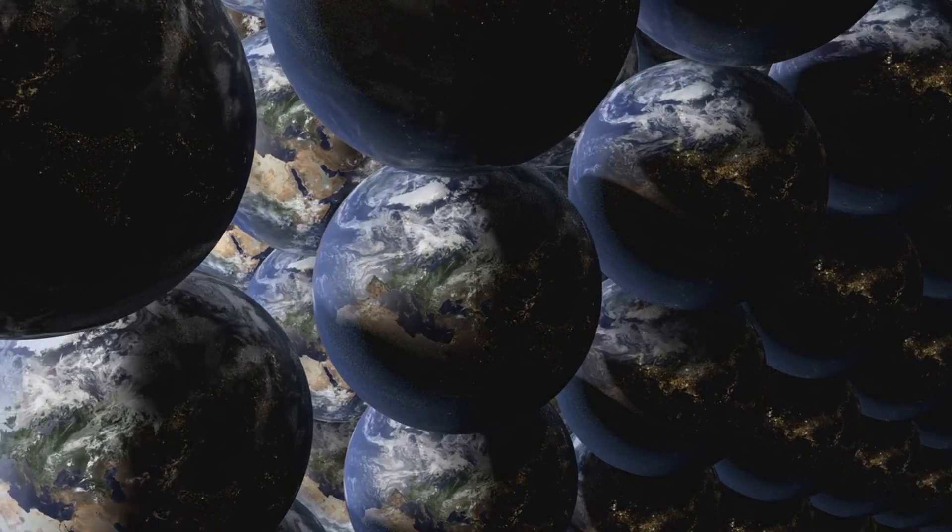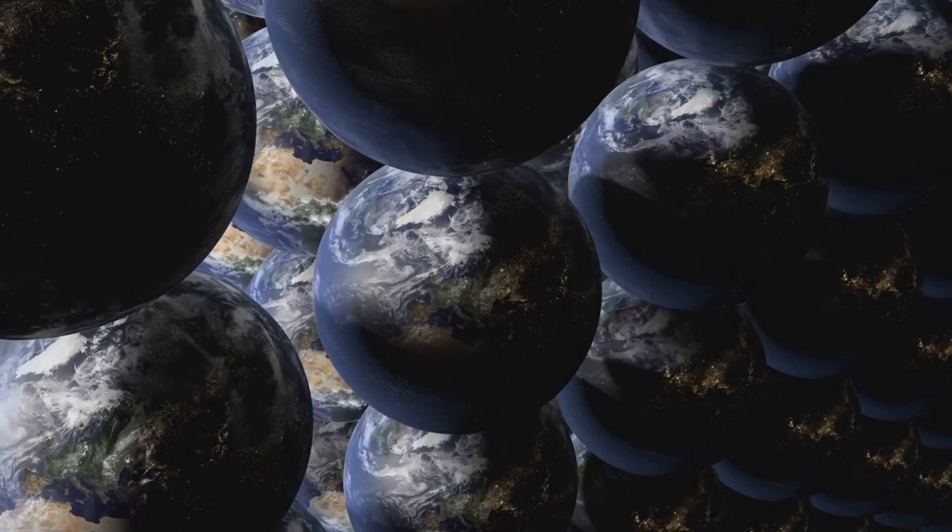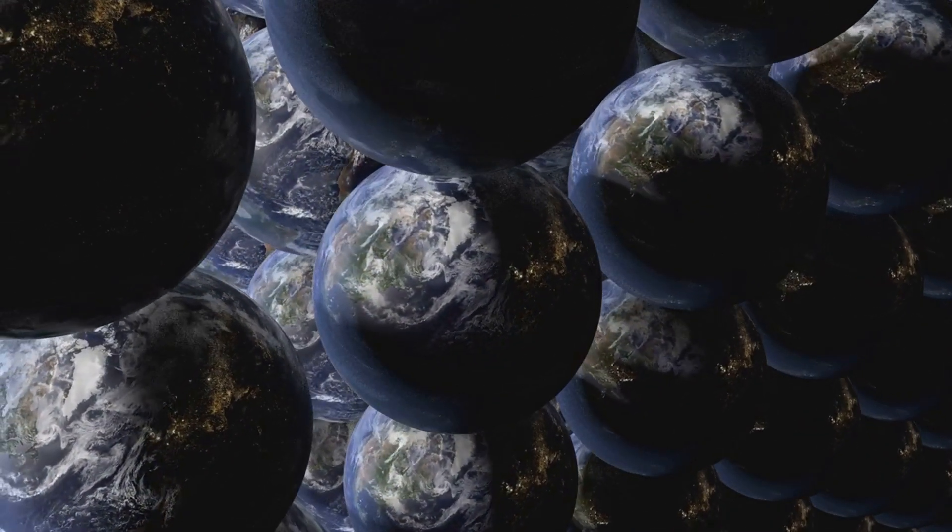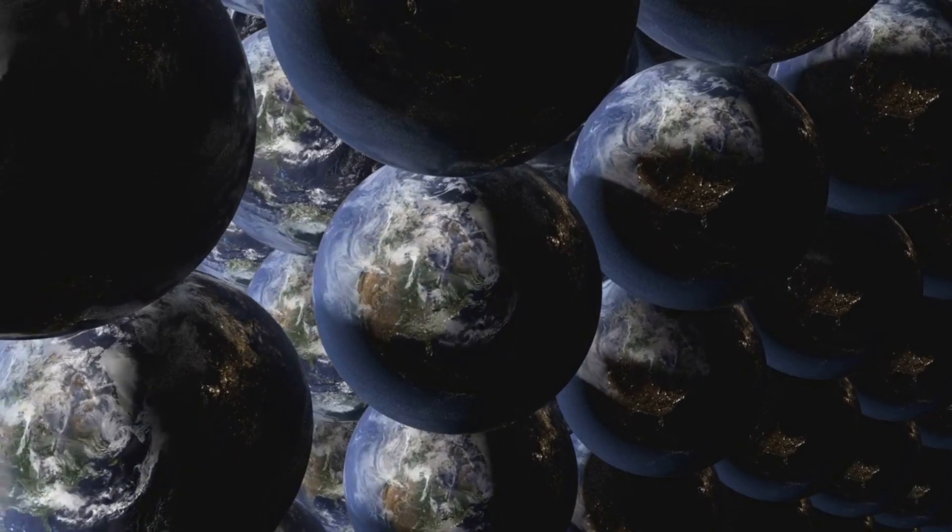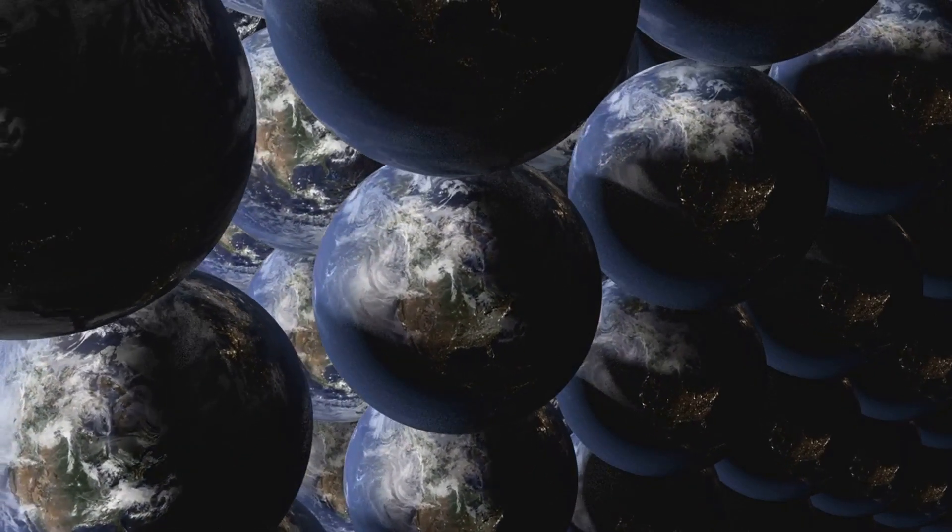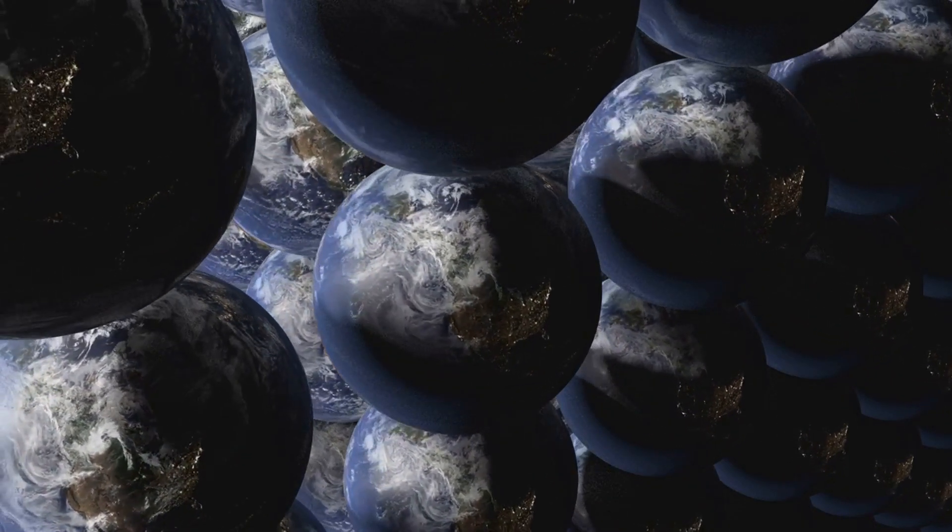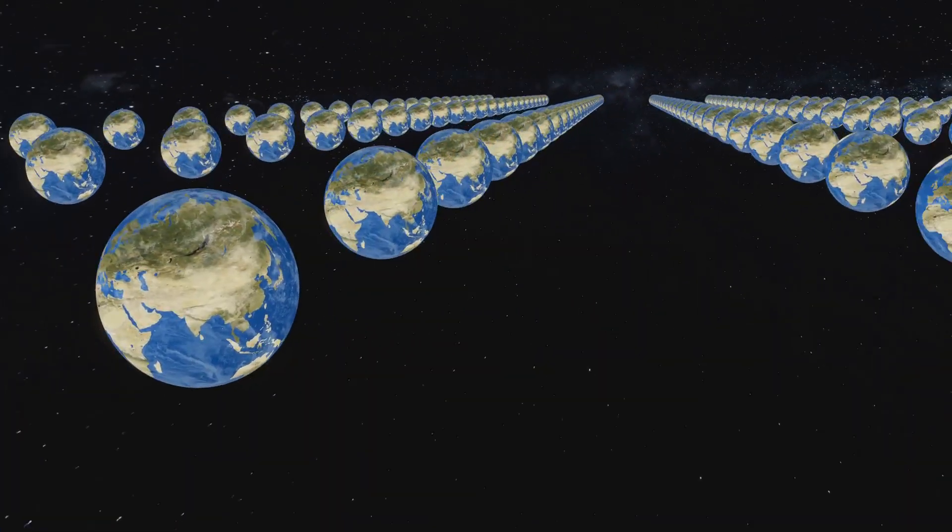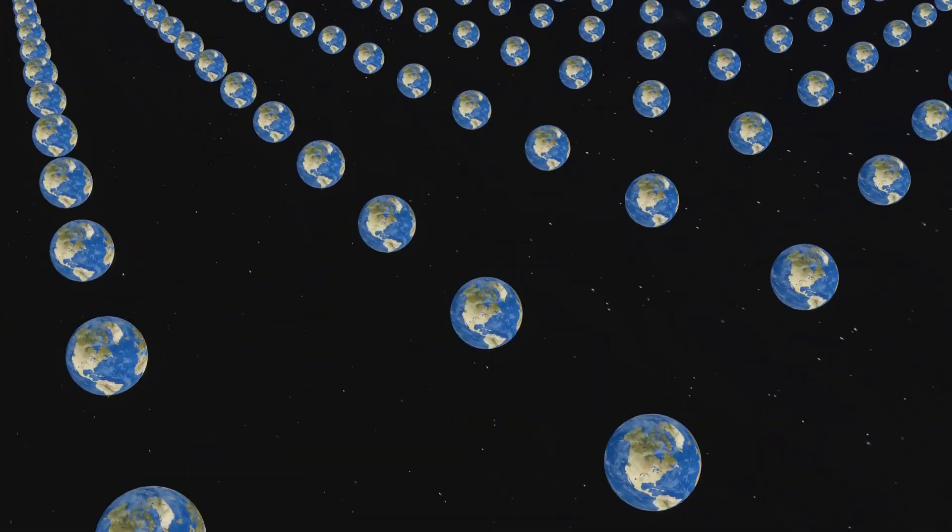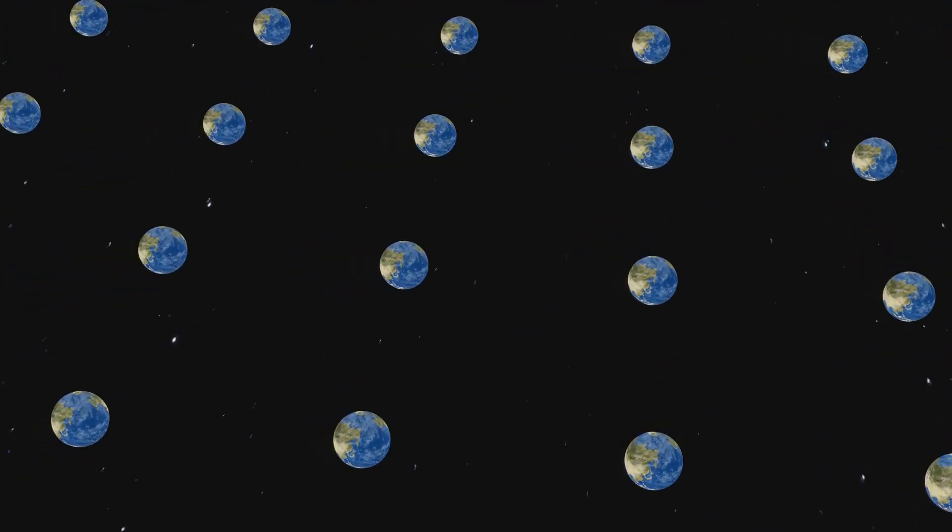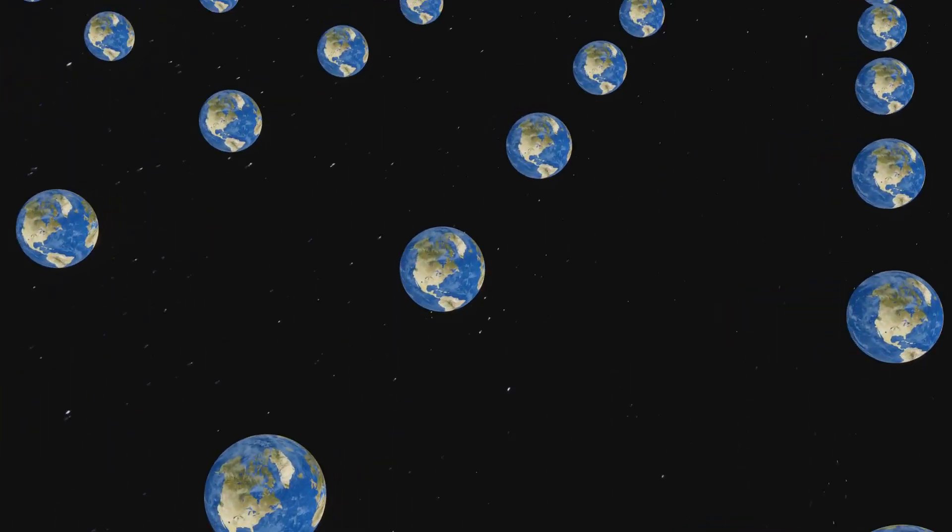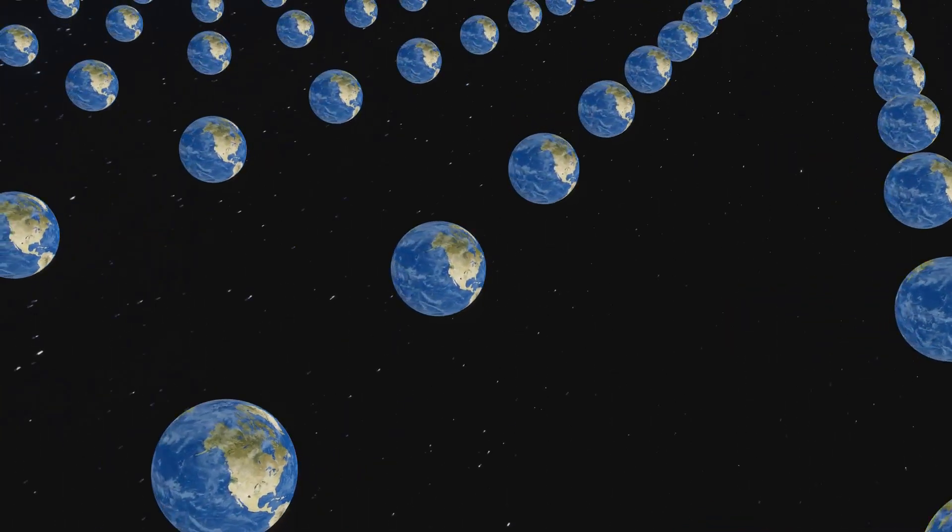Some theories suggest a landscape of universes, each with different rules, and some areas are better for life than others. This concept, known as the multiverse landscape, proposes that different regions of the multiverse might have different physical laws and constants. Some of these regions might be more conducive to the development of life, while others might be inhospitable. This idea has profound implications for our understanding of the conditions necessary for life and the potential for its existence elsewhere in the multiverse.